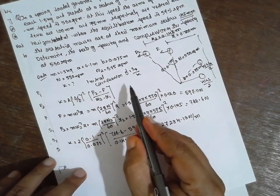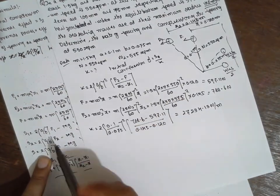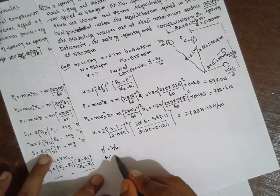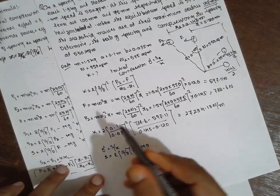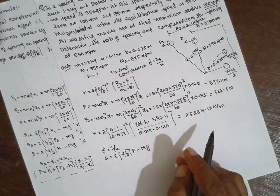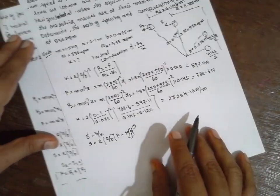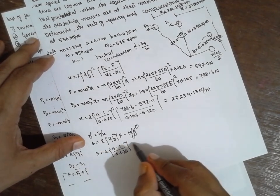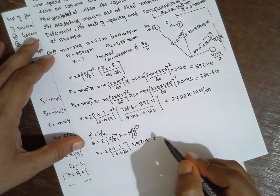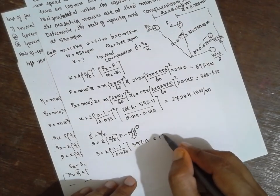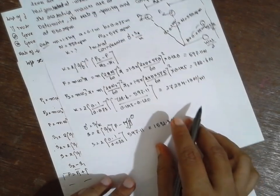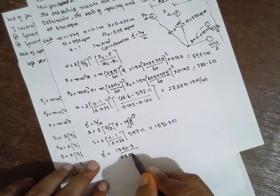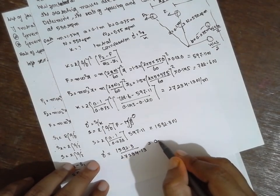Now we find the initial compression. S is the initial spring force, given by S equals 2 times (A/B) times F minus M·G. Capital M·G is not given, so we neglect it and make it zero. Therefore, S equals 2 times (0.1 divided by 0.075) times 597.11, giving S equal to 1592.3 N. The initial compression delta equals S divided by K, that is 1592.3 divided by 27234.13, giving delta equal to 0.0584 meter.